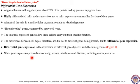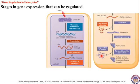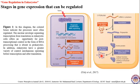When gene expression proceeds abnormally, serious imbalances and diseases including cancer can arise. Cancer is the abnormal growth of cells resulting from a lack of coordination. There are several stages in a eukaryotic cell where the product of a gene can be regulated, and this chart explains those different stages.